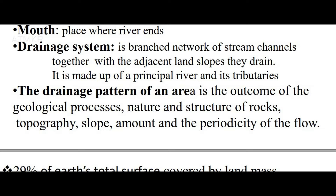A drainage system is made up of a principal river and its tributaries. The drainage pattern of an area is the outcome of geological processes including the nature and structure of rocks, topography, slope, amount, and the periodicity of the flow.